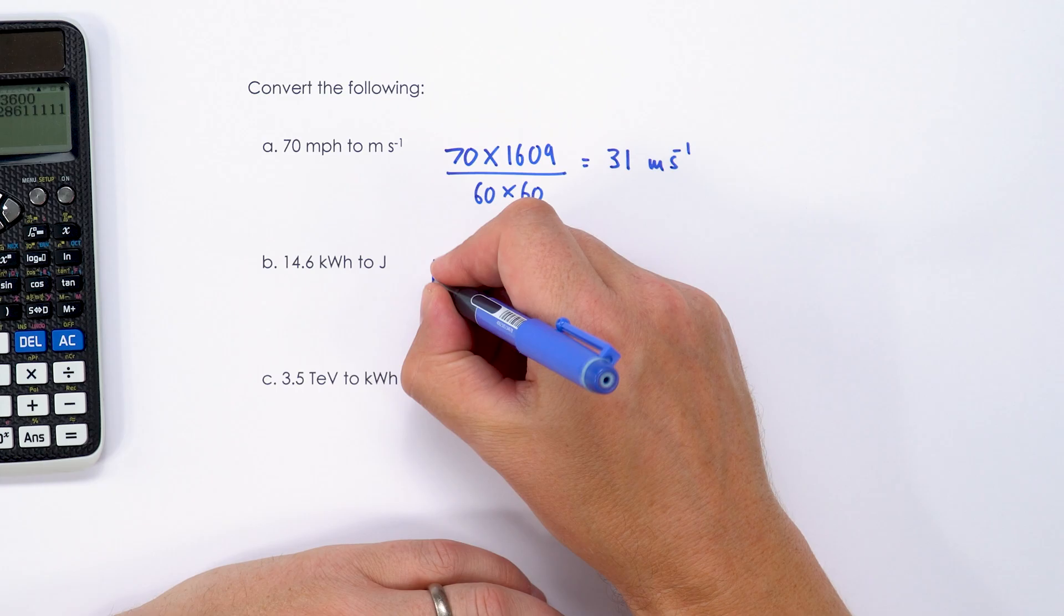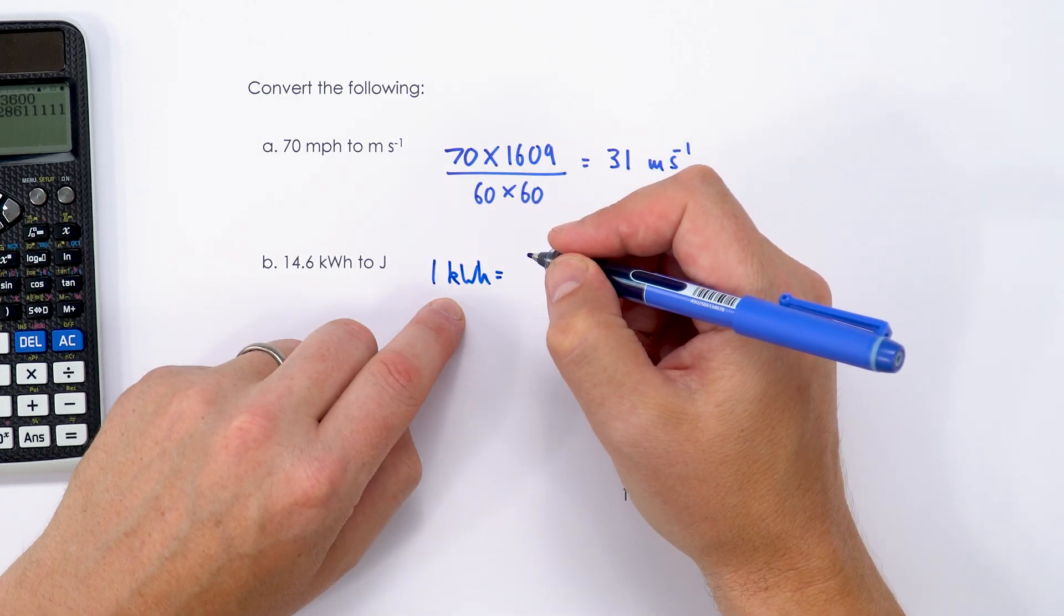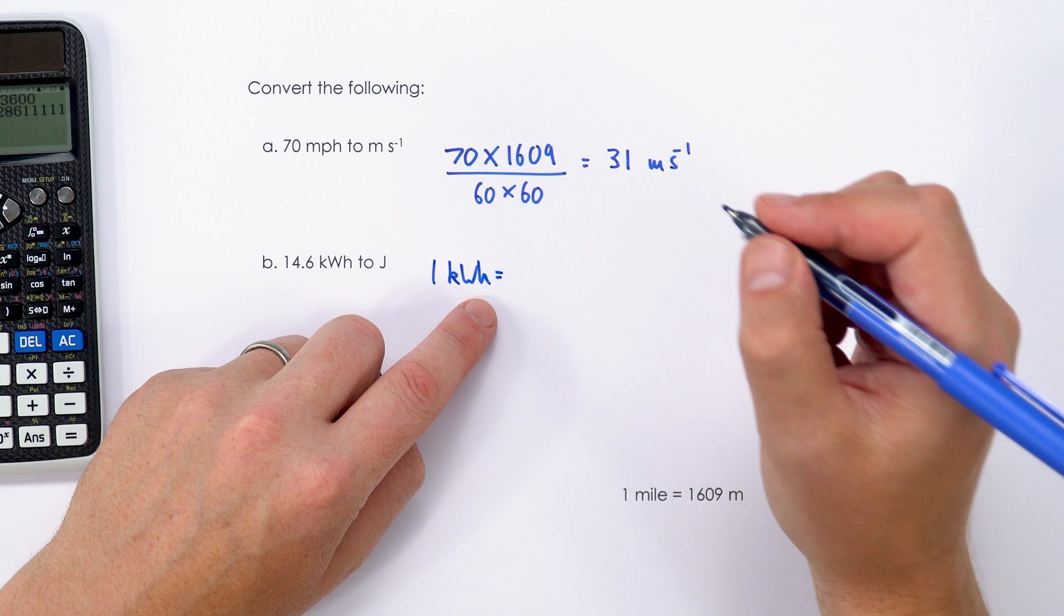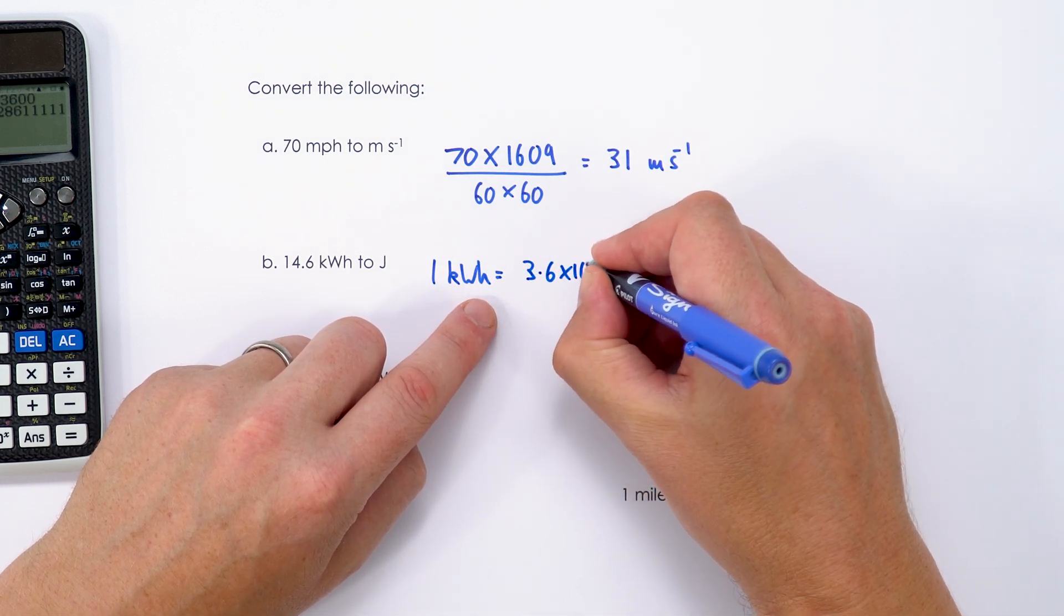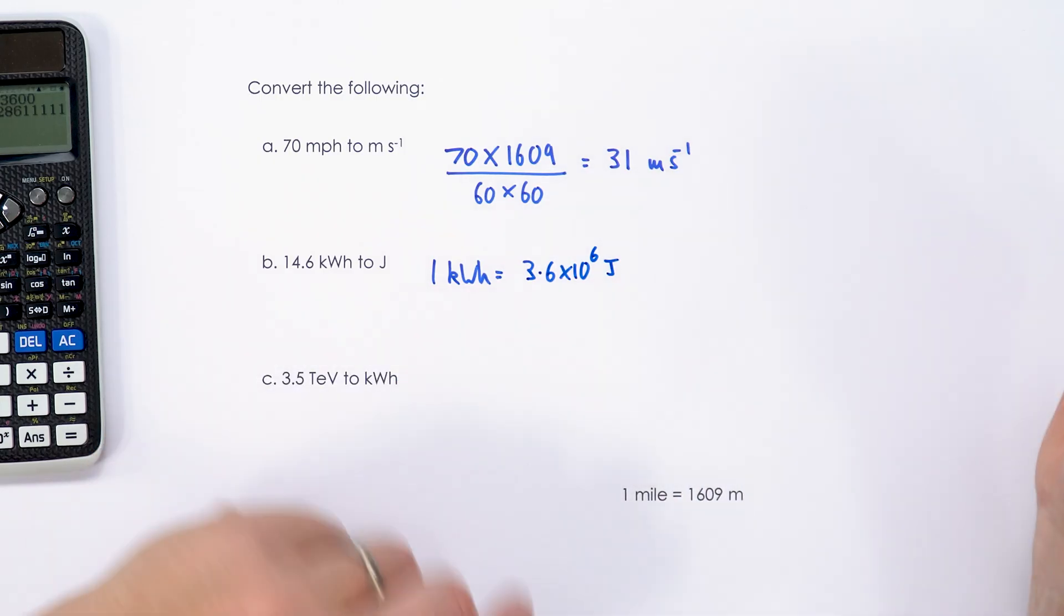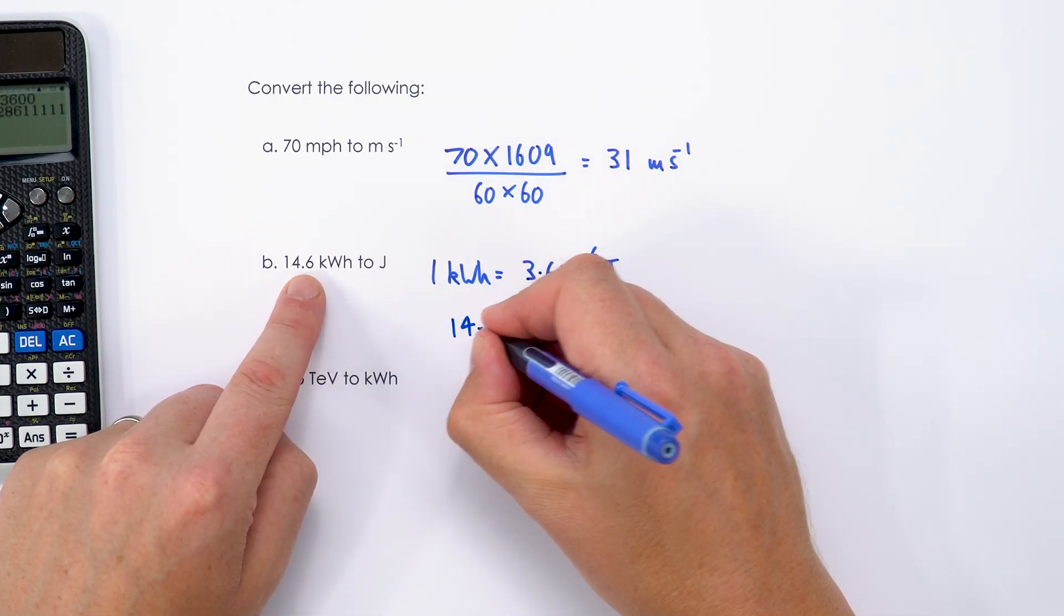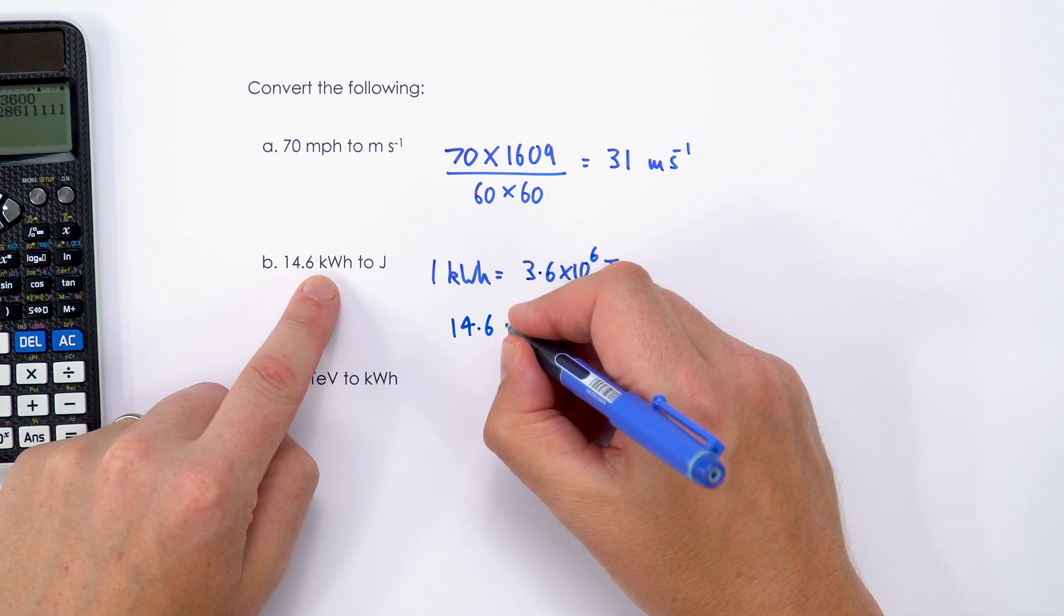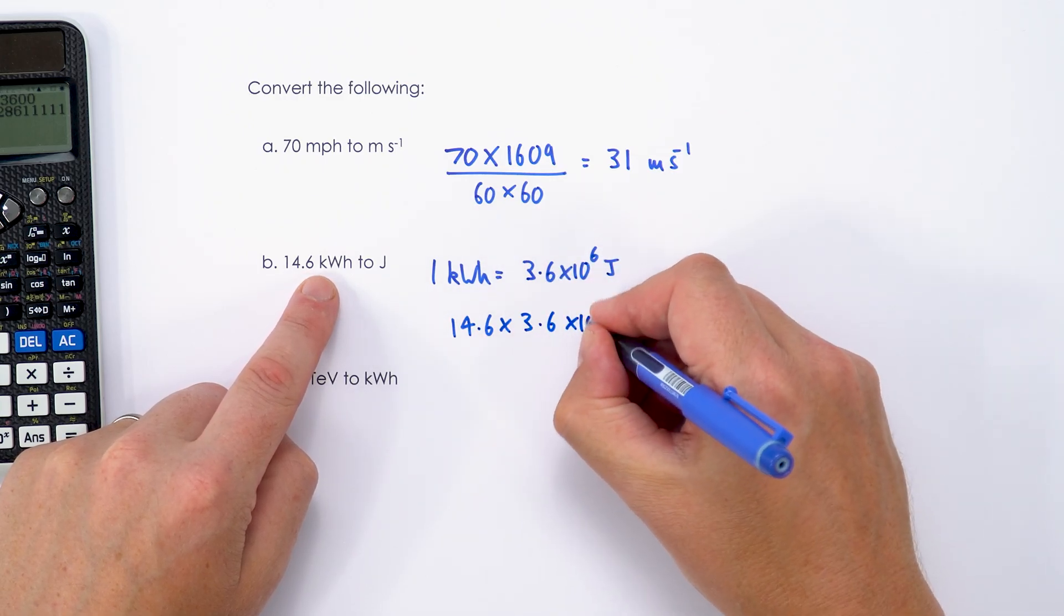For the next question we're going to be converting between kilowatt hours and joules. One kilowatt hour is going to be the same as a thousand watts times 3,600 seconds, which is 3.6 times 10 to the 6 joules. So if we've got 14.6, we're going to multiply that by this number up here, 3.6 times 10 to the 6.